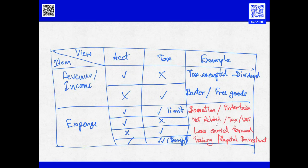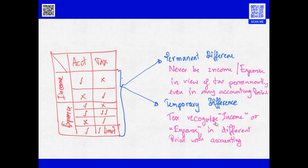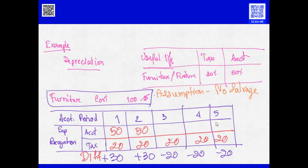We have to find out for each item whether it is a permanent or temporary difference. A permanent difference means the difference that makes an income or expense affect the calculation of corporate income tax but is never recognized as income or expense from the tax perspective, permanently, in any accounting period. For a temporary difference, it means the item where tax recognizes it as income or expense, but it may be in a different accounting period — this difference will be addressed in the calculation in the accounting period when the tax recognition criteria are fulfilled.